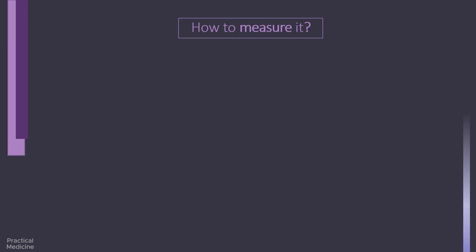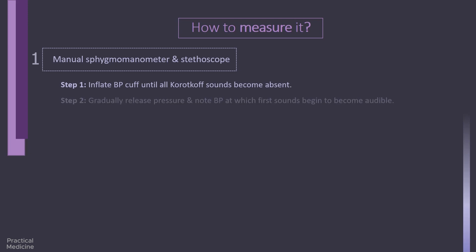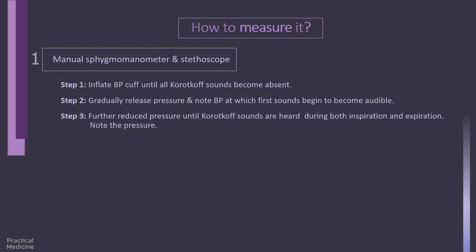How to measure pulsus paradoxus. Automated blood pressure cuffs cannot accurately measure for pulsus paradoxus. It is best measured manually with a manual sphygmomanometer and stethoscope. Assessment is made by inflating the cuff until all Korotkoff sounds are absent. Then gradually release pressure from the cuff. The first sounds auscultated will be heard only during expiration, and this pressure should be noted. Next, as the cuff pressure is further reduced, the pressure should be noted when Korotkoff sounds are heard during both inspiration and expiration. The difference between these two measurements, if greater than 10 mmHg, indicates the presence of pulsus paradoxus.